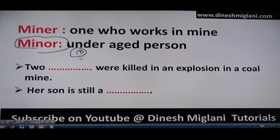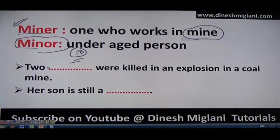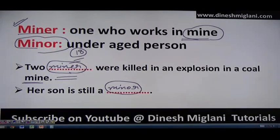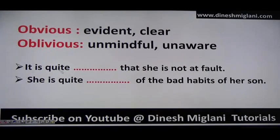Next: 'minor' (M-I-N-O-R) and 'miner' (M-I-N-E-R). Minor means a person under 18 years of age. Miner is one who works in a mine. Example: 'Two miners were killed in an explosion in a coal mine' — the persons working in mines. 'Her son is still a minor' — meaning below 18 years of age.